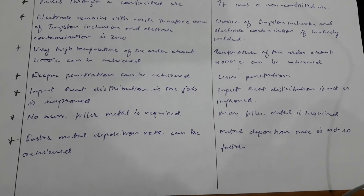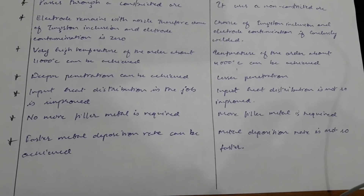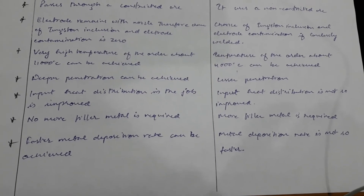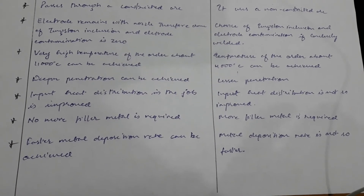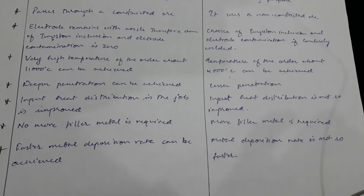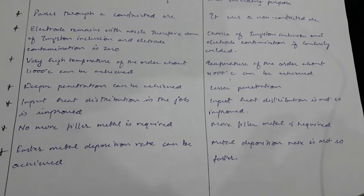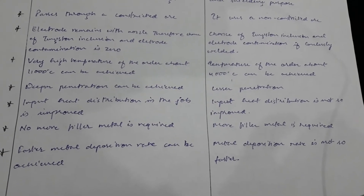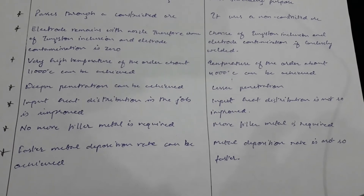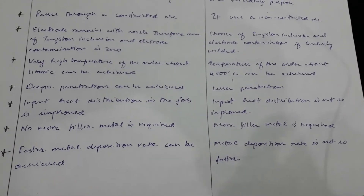The last point is that a faster metal deposition rate can be achieved in plasma arc welding, whereas in TIG welding the metal deposition rate is not so fast.